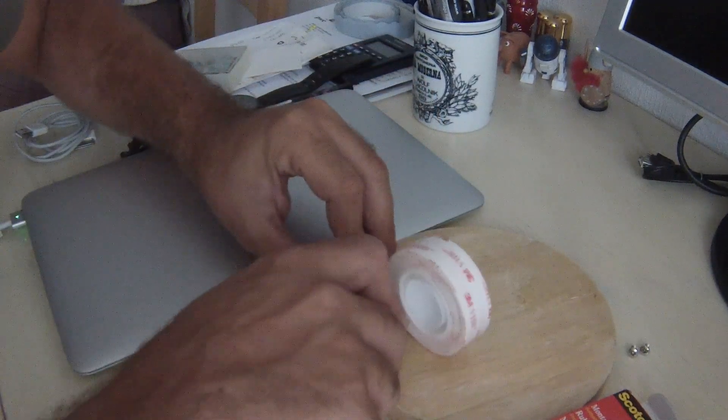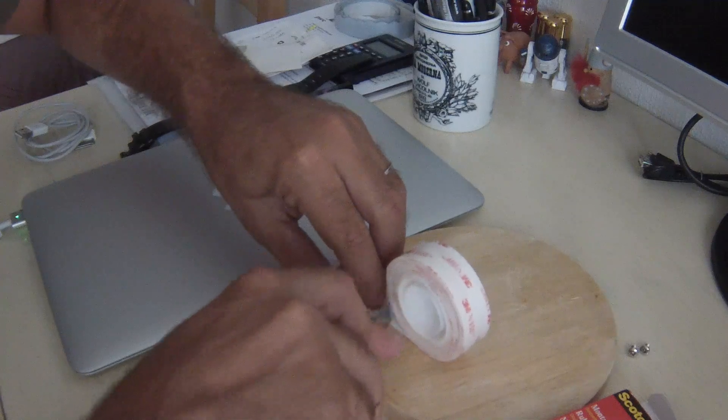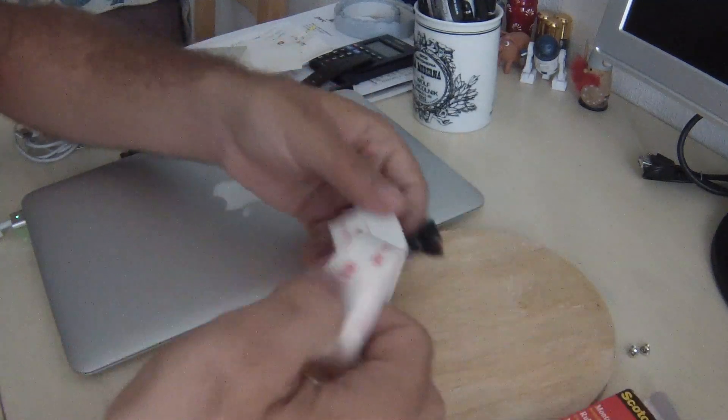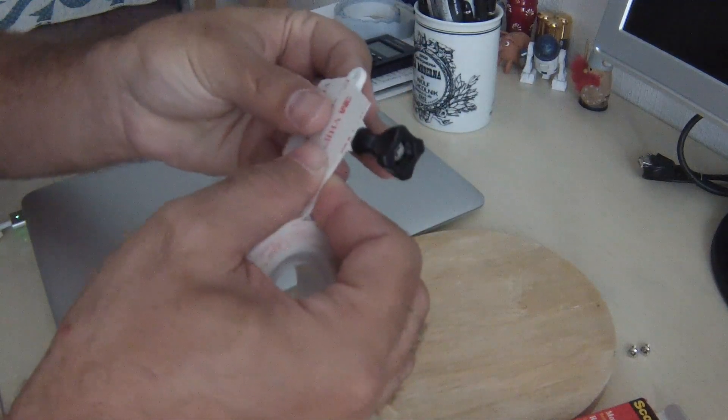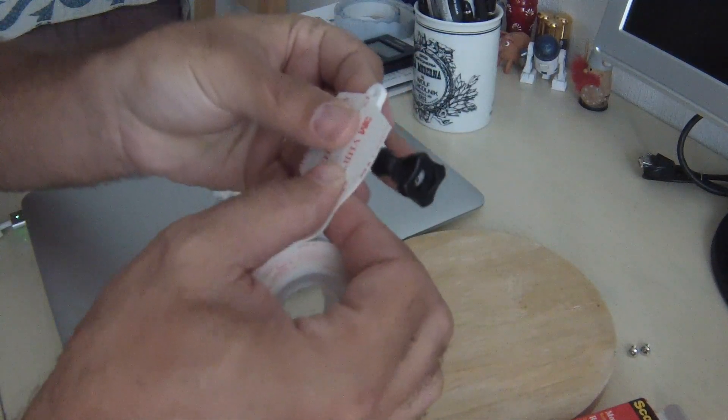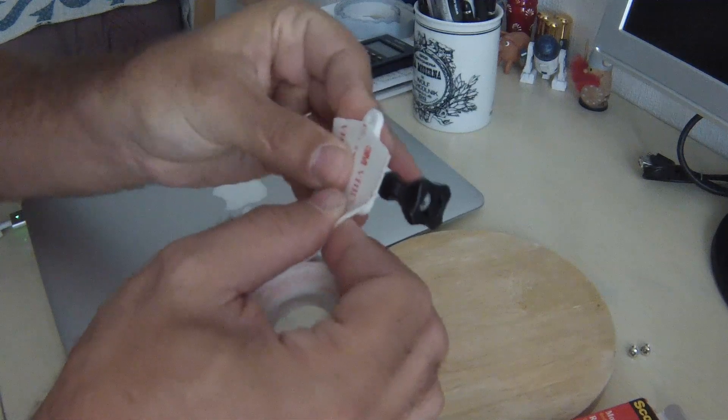As you can see, I added two strips of this tape because the tape isn't wide enough to fit just one. You add two and stick it on. You can see a bit of excess that we're going to take off now.